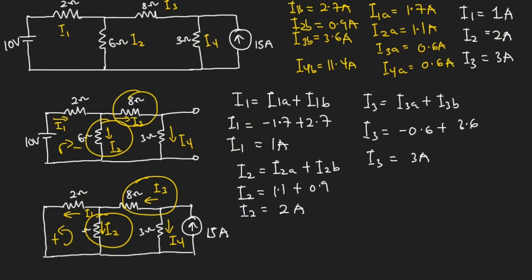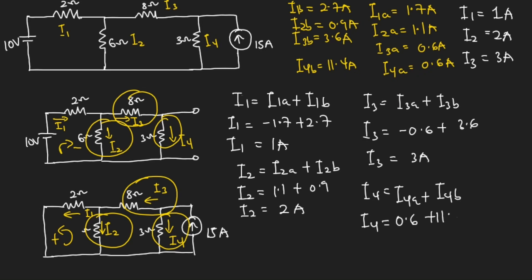Finally for I4: I4 equals I4A plus I4B. When considering the 10 volts this was the direction, and for the 15 amperes it was the same direction. So we add those values without negating any of them. Therefore I4 equals 0.6 plus 11.4, giving us I4 equal to 12 amperes.